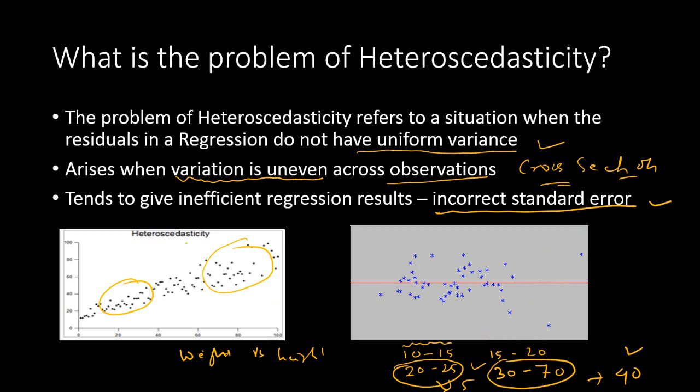Another indication of heteroscedasticity is when you look at the errors — they should be uniformly distributed across the line. In some cases, you will see a deviation where some observations are lying far away from the other observations. Chances are that heteroscedasticity is present when you have outliers lying on both sides of the line. One of the best ways to detect heteroscedasticity is to create this plot and see how the observations are distributed.